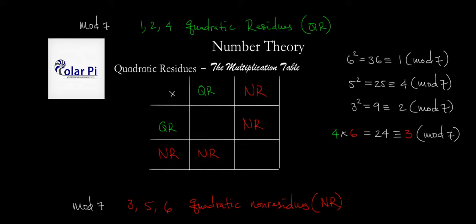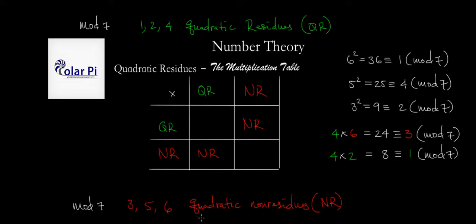So two more to try. Now let's take the residue 4 and multiply it by another residue, 2. Then we get 8, and 8 is congruent to 1 mod 7. Therefore a residue times a residue gives us a residue, because 1 is a quadratic residue mod 7. So quadratic residue times quadratic residue is a quadratic residue.